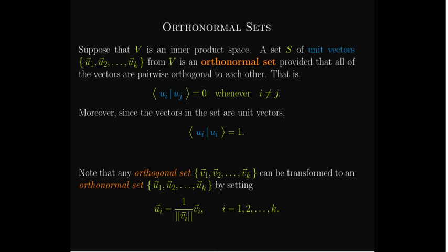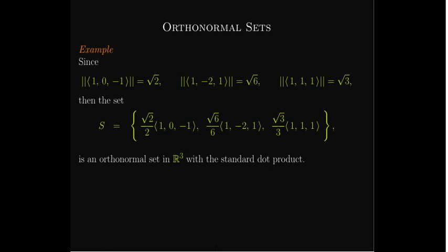If you have an orthogonal set — and it turns out it's going to be easier, at least by hand, to calculate an orthogonal set — we can transform that orthogonal set into an orthonormal set by simply taking each vector and dividing it by its norm to make it into a unit vector. For example, if we had our orthogonal set from the first example in R3, we calculate the norm of each vector and then divide each vector by its norm, and now we have an orthonormal set.